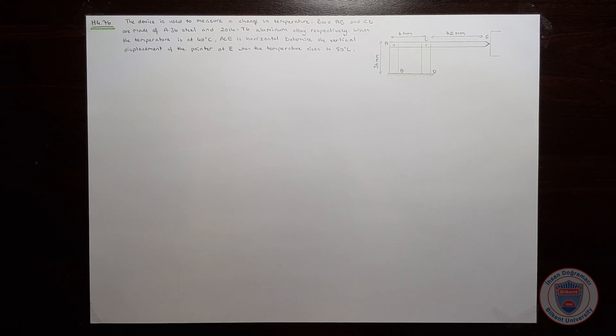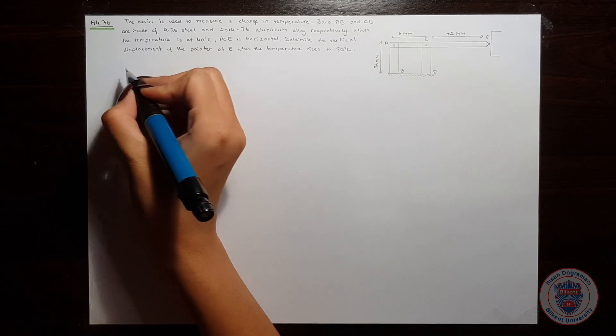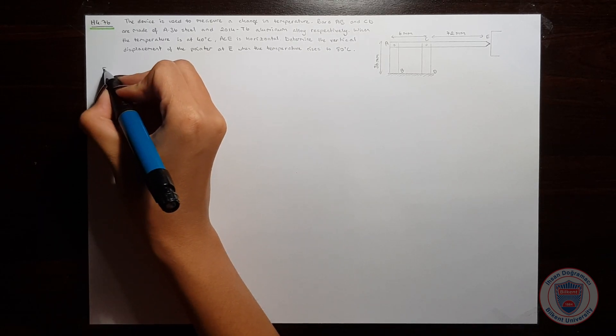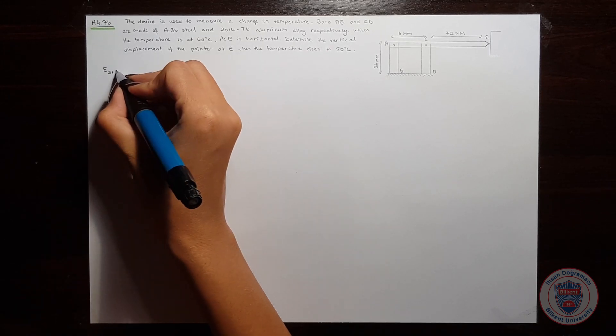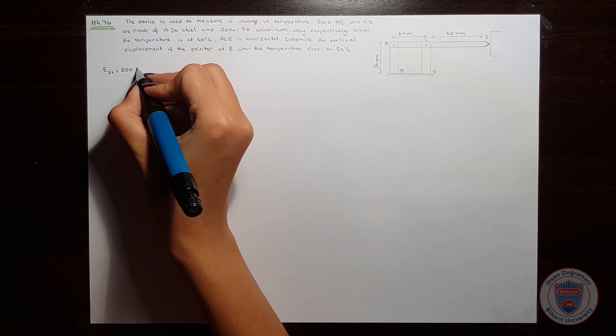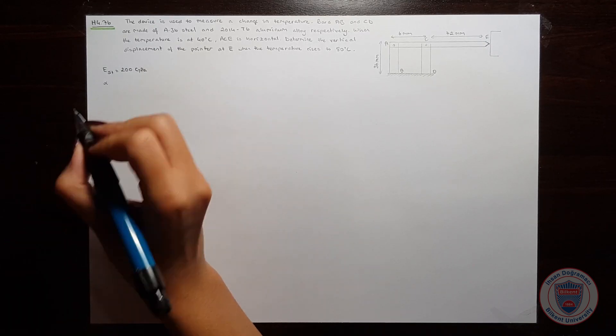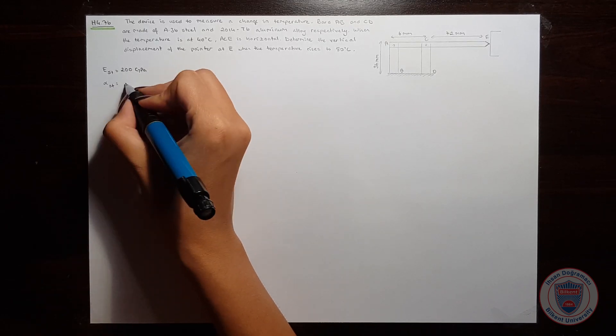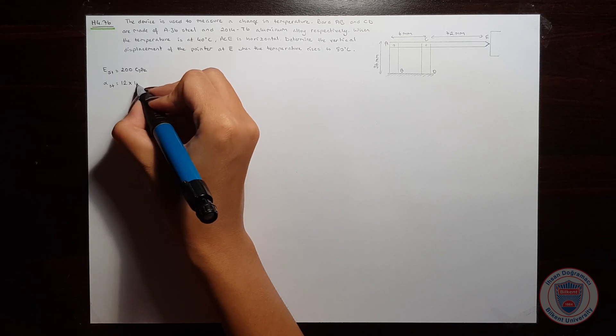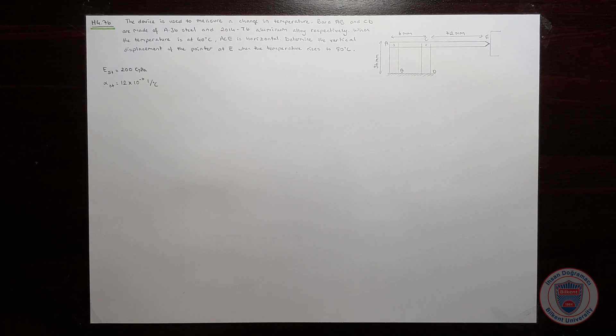I will first write the material properties which are necessary for our solution. From our book, we know that Young's modulus of steel is 200 GPa and the coefficient of thermal expansion is 12 times 10 to the power of minus 6, 1 over centi degrees.